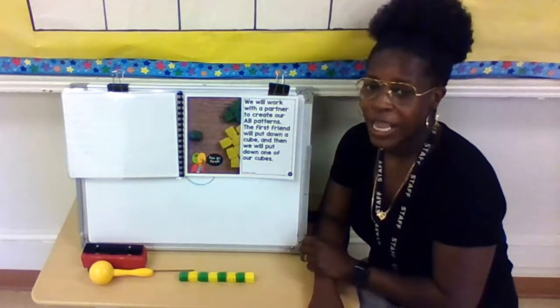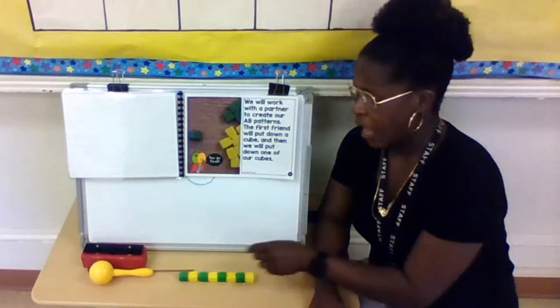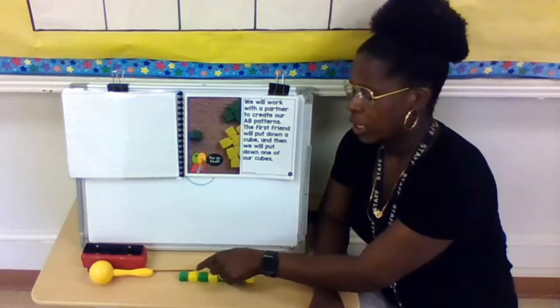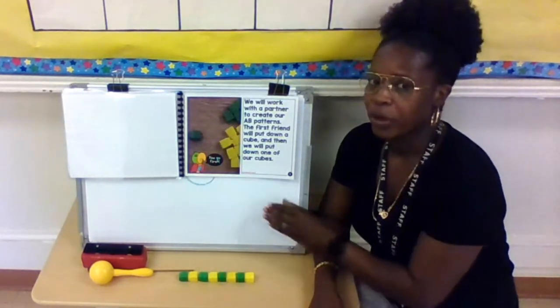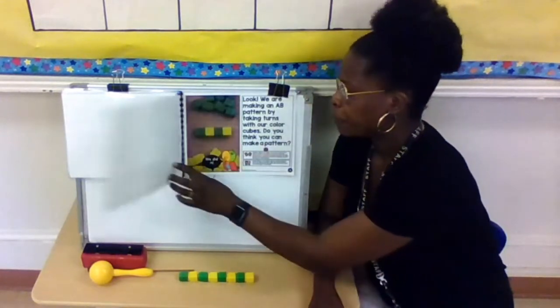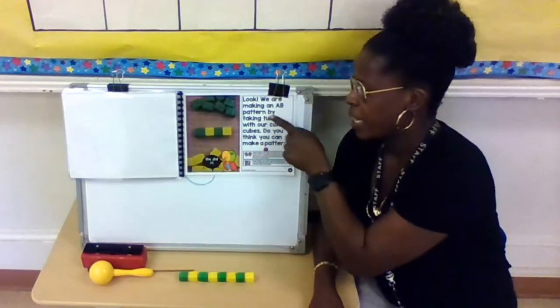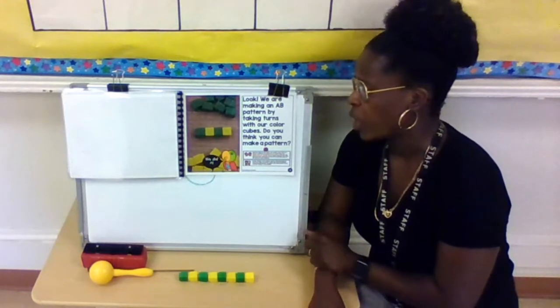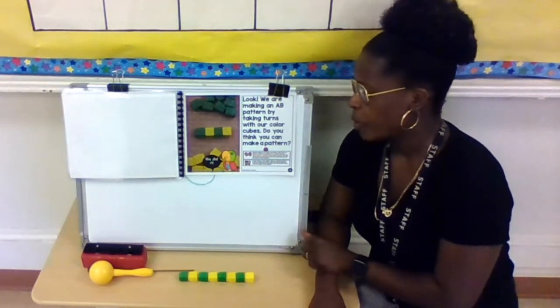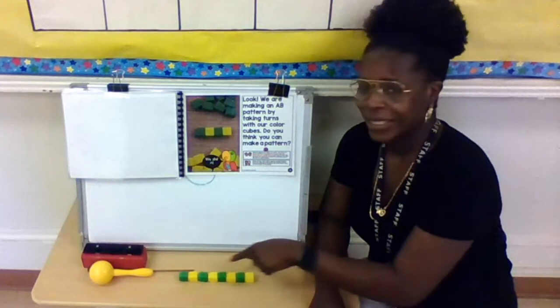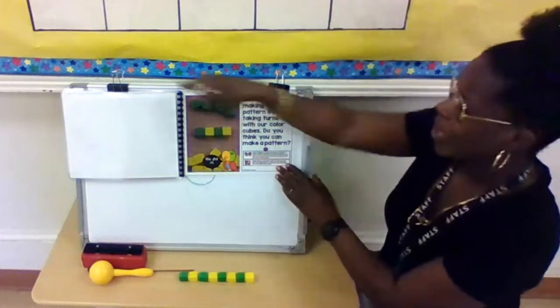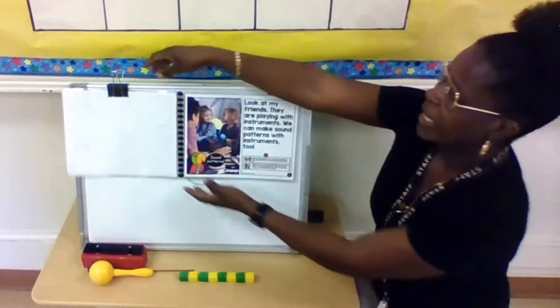This is a simple pattern, but today we're going to learn about growth patterns. And what's going to happen is instead of doing one at a time, it's going to get bigger and bigger. The numbers are going to grow. You'll see. Look, we are making an A, B pattern by taking turns with our color cubes. Do you think you can make a pattern? We already did, my friends. So that is going to help us with today. That gave us a little bit of review.